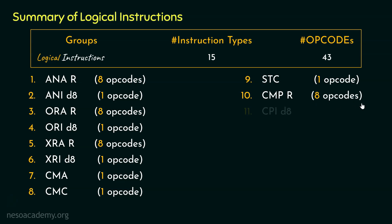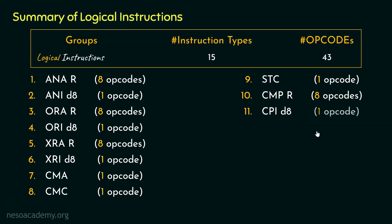The next instruction type was CPID8 — compare immediate: compare the accumulator's content with 8-bit immediate data. For this instruction there is only a single opcode.